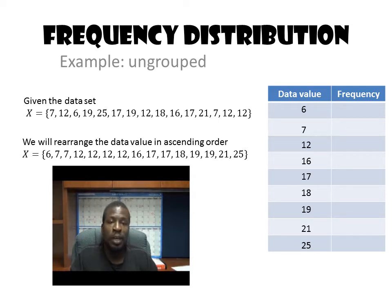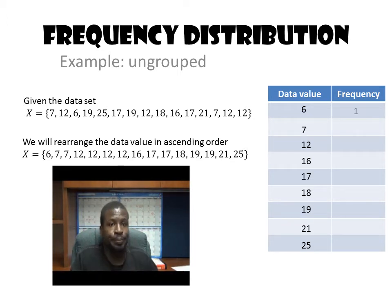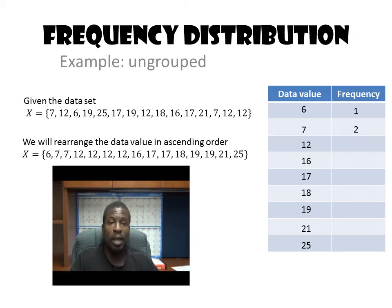Once we have the data values listed, we're going to count how many of each value there are and record that as the value's frequency. We have only a single 6, so the frequency for 6 is 1. Moving on, I see two 7s, so the frequency of 7 is 2. Then we have 1, 2, 3, 4 twelves — so 12 has a frequency of 4.